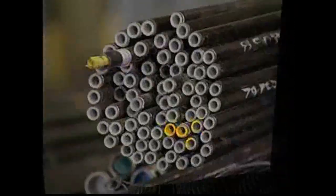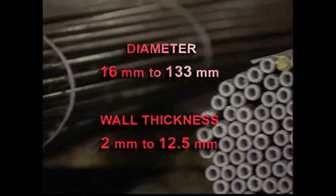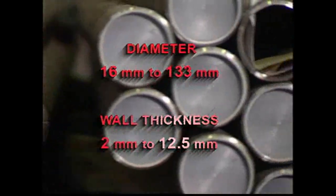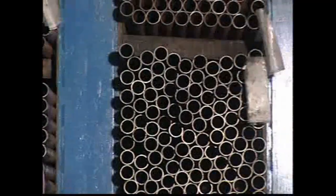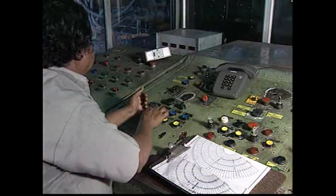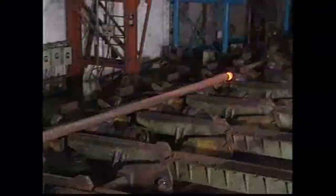The wide range of products covers tubes from 16mm diameter to 133mm diameter and wall thickness from 2mm to 12.5mm in carbon and low-alloy steel grades. The hot mill of BHEL SSTP with automatic controls is designed for an output of 3 tubes per minute.